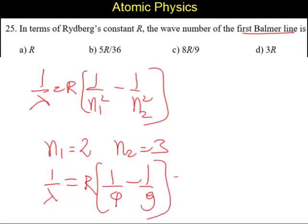It is going to be 5R by 36. So, the correct answer is - we are asking for the wave number. Wave number is 1 by lambda, which is called as wave number. So, it is simply 5R by 36.